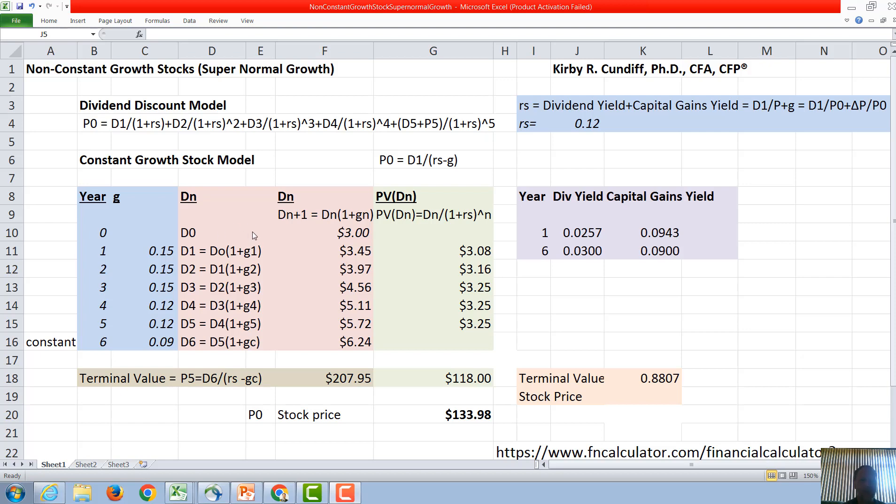So as we proceed we're given the dividend D0 of three dollars. D1 is going to be D0 times one plus the growth rate in year one, and we can see right here that is going to be F10 or three dollars times 1.15. The next year we take D1 times one plus the growth rate in the next year or 1.15 again and get 3.97. The year after that we take 3.97 times 1.15 and get 4.56.